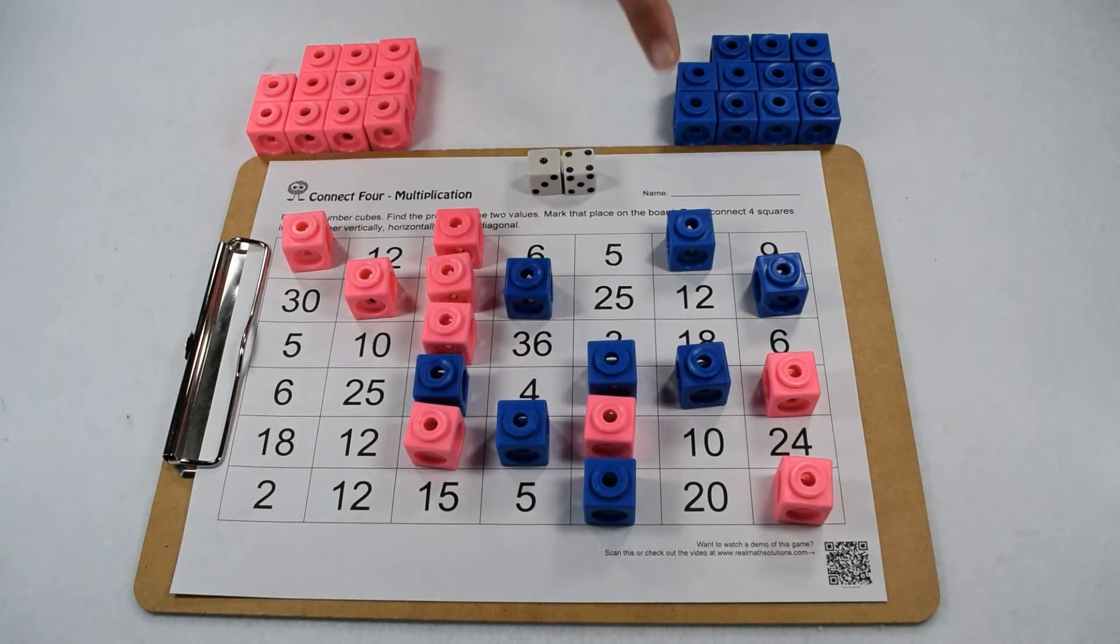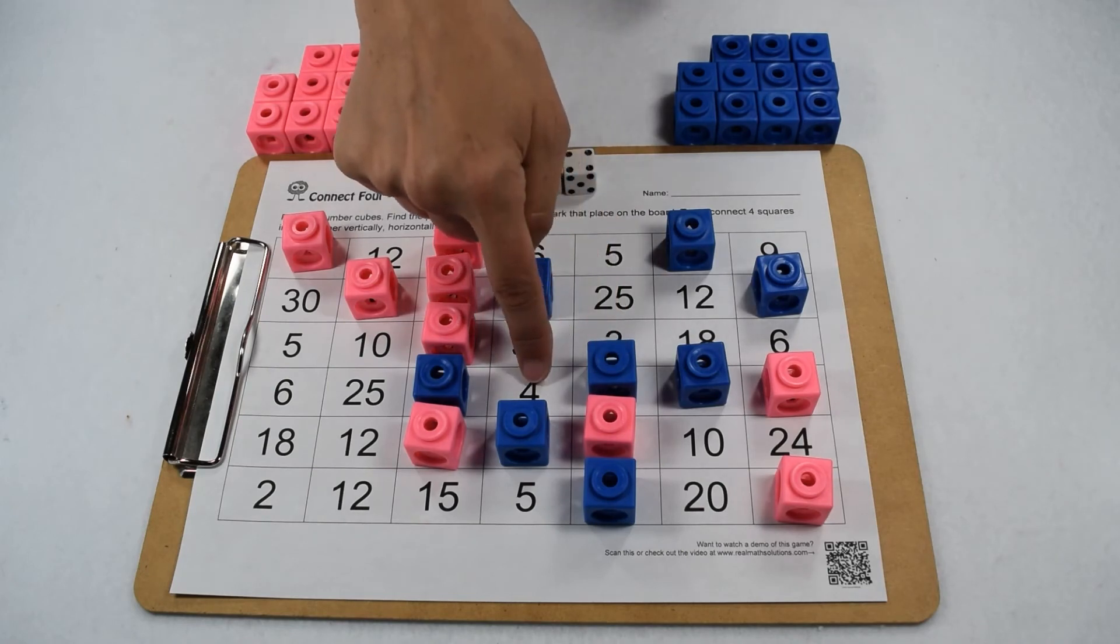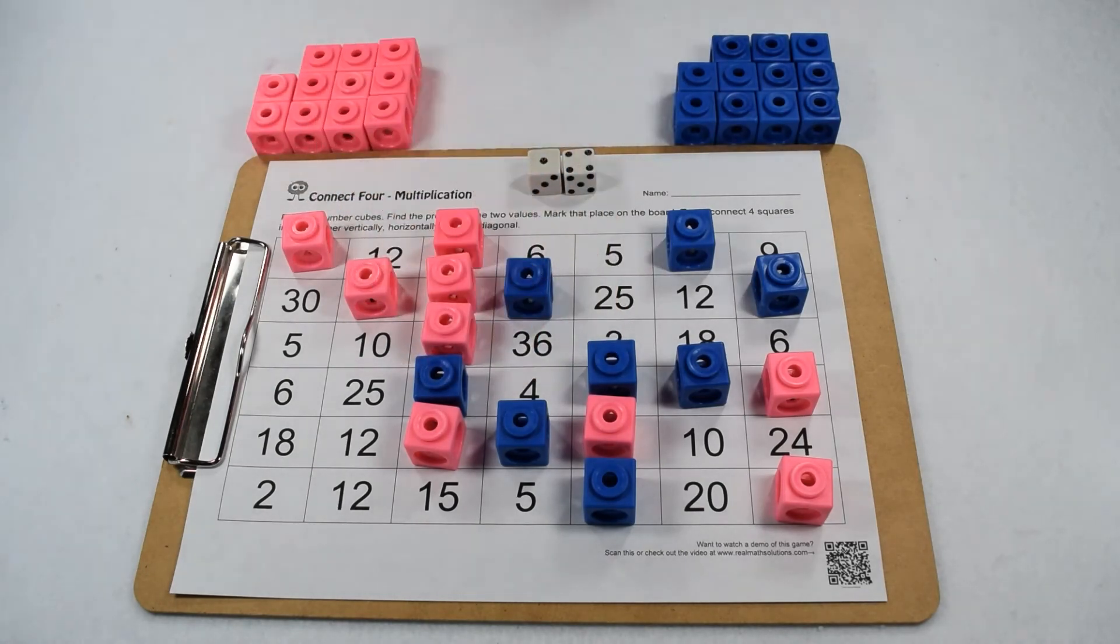Same thing though for our blue player. They could have one, two, three, four in a row if they could roll that four.